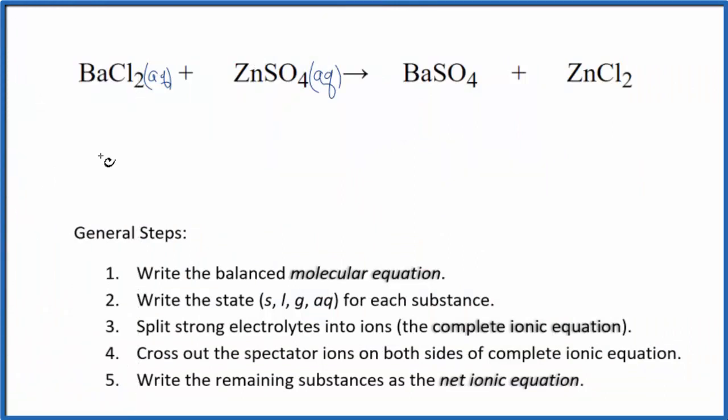So barium sulfate, we said, is insoluble. We're going to write an S because it's going to be a solid. It's not going to dissolve. It's going to stay a solid. In fact, it's going to be a precipitate. It's going to fall to the bottom of the test tube when these two substances react.